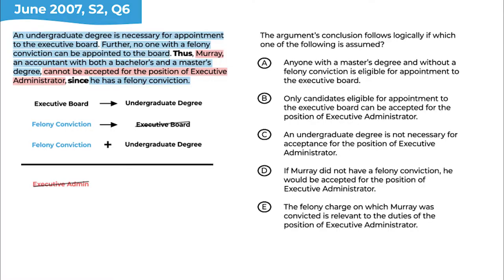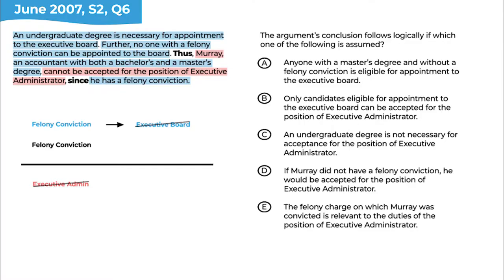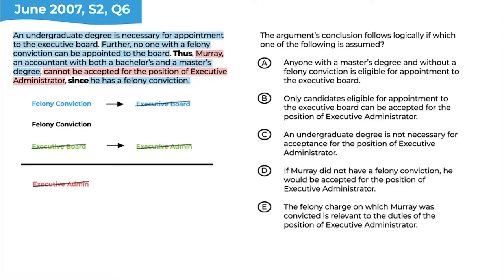There's another common term: felony conviction. In this case, we've met the sufficient condition of the second relationship — Murray has a felony conviction — so we can apply the second premise to establish something. If we filter out unimportant evidence and focus on what links together: if you have a felony conviction, you can't be appointed to the executive board, and Murray has a felony conviction. Therefore, he can't be appointed to the executive administrator. The gap is that we can infer he can't be appointed to the executive board, but that's not quite the same as saying he can't be the executive administrator. So we need the bridge: if you can't be appointed to the executive board, then you can't serve as executive administrator. That's the assumption we need to find.